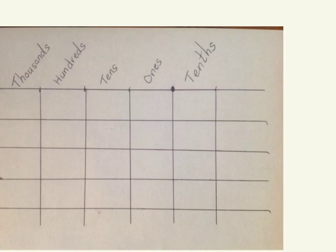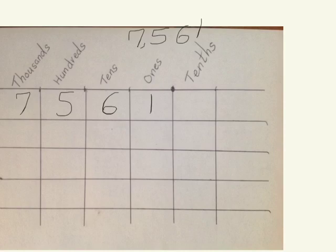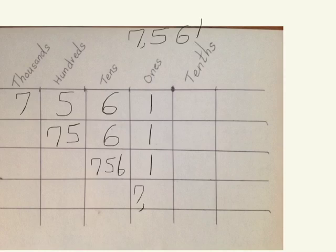Before we start rounding decimals, we're going to look at some whole numbers. We'll begin with the number 7,561. The first thing we need to do is decompose the number. One way to look at this number is 7,000 + 500 + 60 + 1. Another way: 7,500 + 60 + 1. Or 7,560 + 1. Or even 7,561 ones. When we decompose a number, we break it down into its many parts.